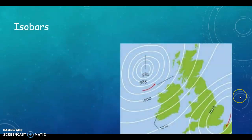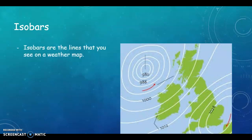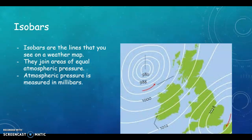So isobars, I think the best way that you can think of them is think of them as being a little bit like contour lines. So where your contour lines join areas of equal height, your isobars join areas of equal atmospheric pressure. So they are lines on a weather map, they join areas of equal atmospheric pressure and they are measured in millibars.